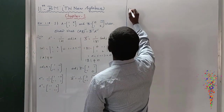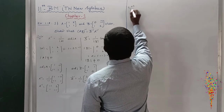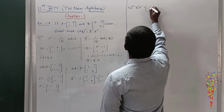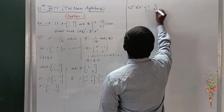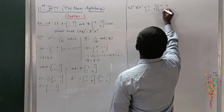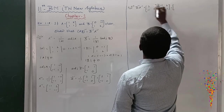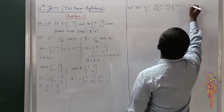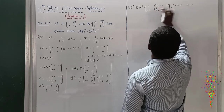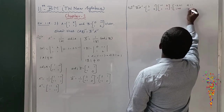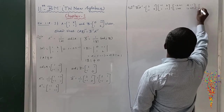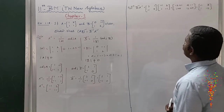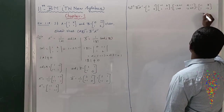Now taking the right-hand side: B inverse into A inverse. B inverse is [2, 1; -1, 0] and A inverse is [-1, 2; 1, -1]. Multiplying: row 1 gives (-2+1, 4-1) and row 2 gives (0+1, -2+0) — so the result is [-1, 3; 1, -2]. This is equation number 1.